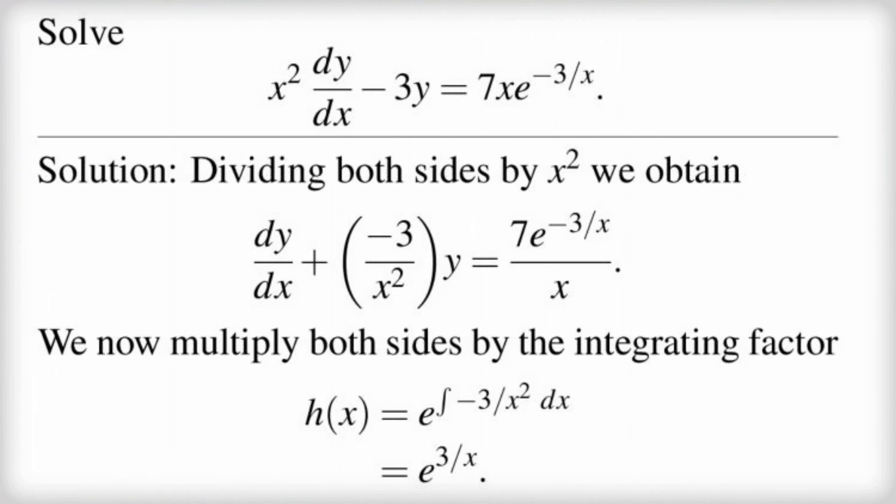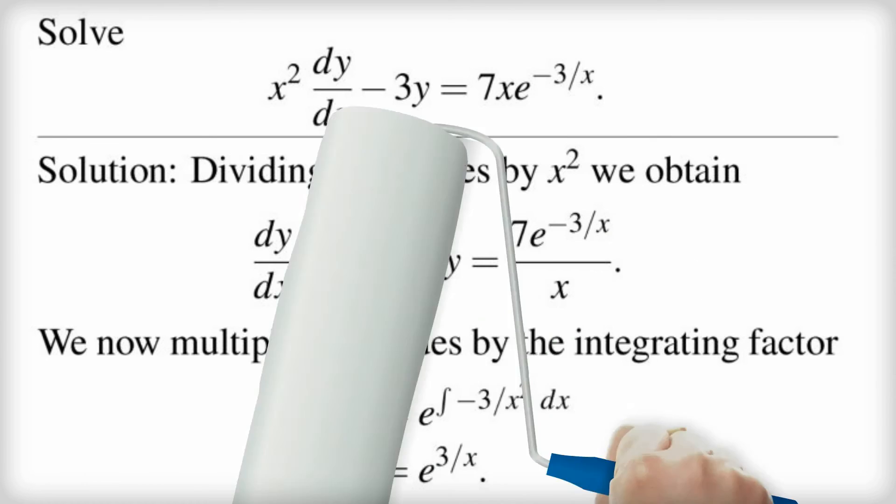So here's how we work out what to multiply both sides by. It's called the integrating factor, which I've called h(x). And the way we do that is we take e, we take to the power of the integral of, and then we put in whatever we've multiplied y by in our equation. So in my case here, I've got negative 3 divided by x squared. So I put that in the integral. I do the integration and I'm left with h(x) equals e to the power of 3 divided by x.